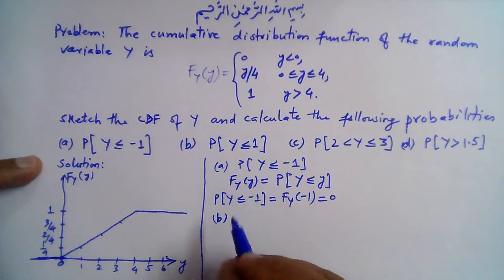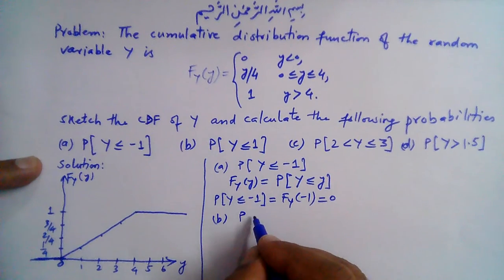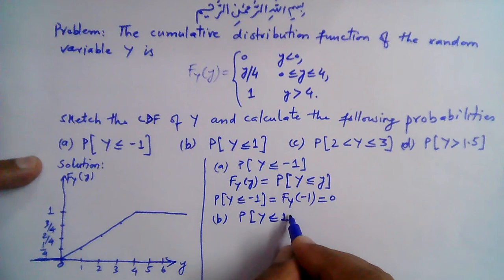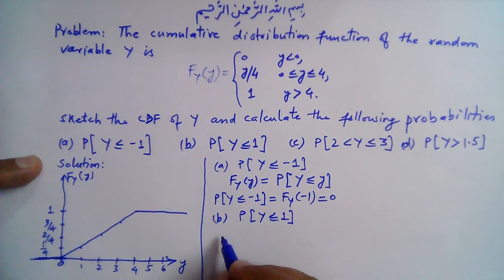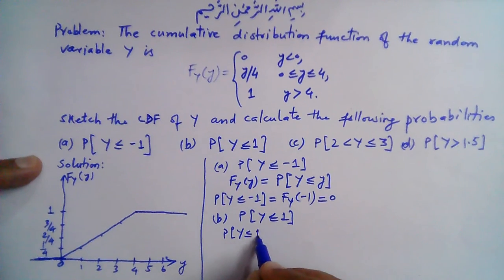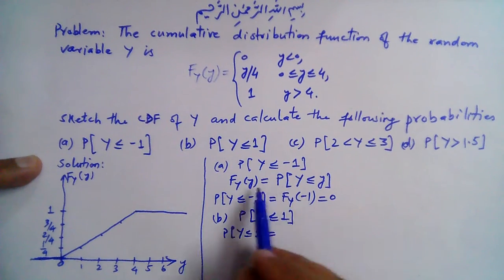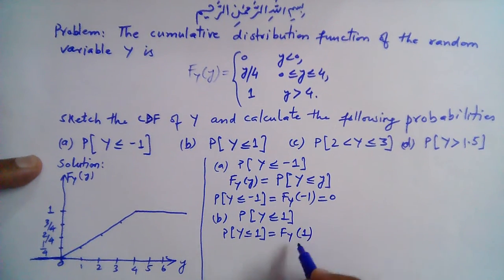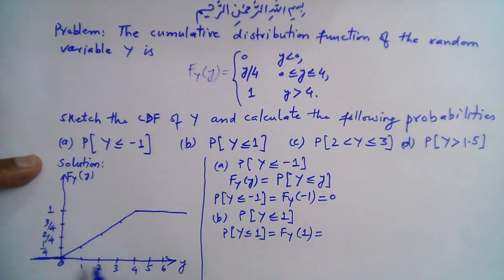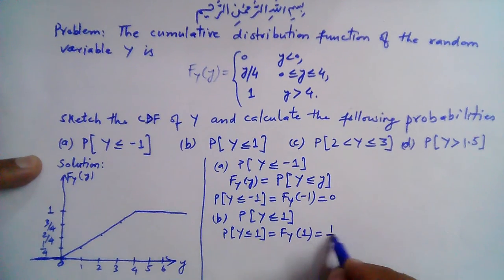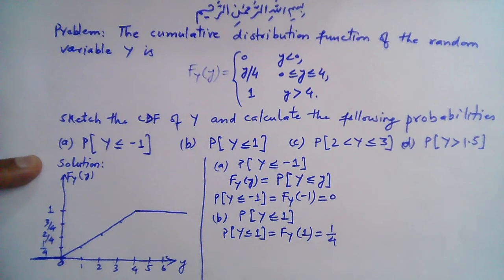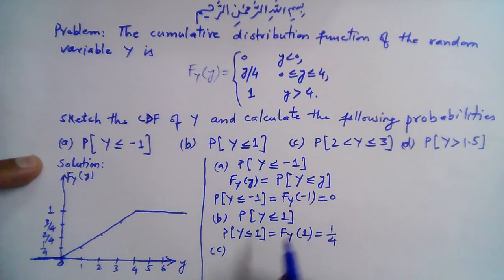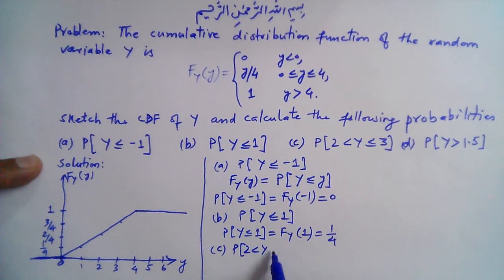Part b: probability that Y ≤ 1. Again, by definition this is given by the value of the CDF at 1, so P(Y ≤ 1) = F_Y(1). At 1, the value is y/4 = 1/4, so part b is 1/4.